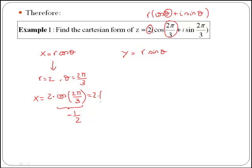Remember it's minus because it is in the second quadrant. So we have 2 times minus a half, which is equal to minus 1. So that is our x.